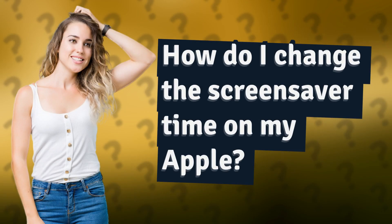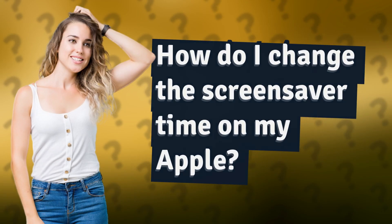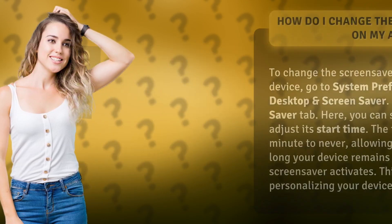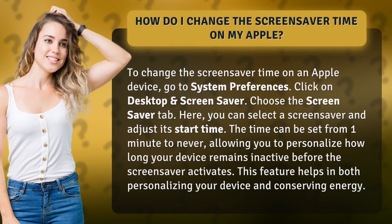How do I change the screensaver time on my Apple? To change the screensaver time on an Apple device, go to System Preferences. Click on Desktop and Screensaver. Choose the Screensaver tab.